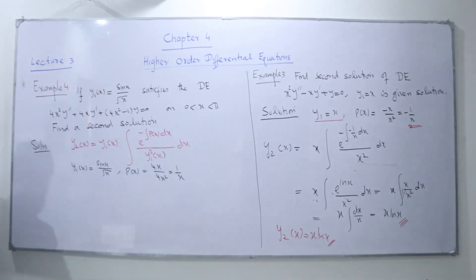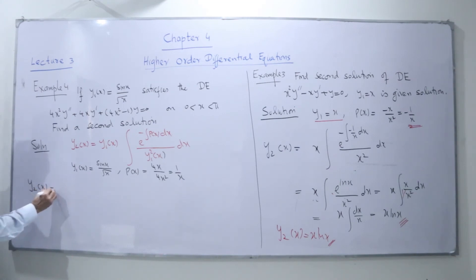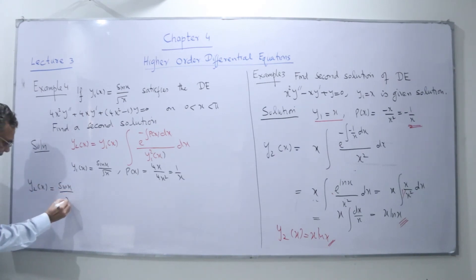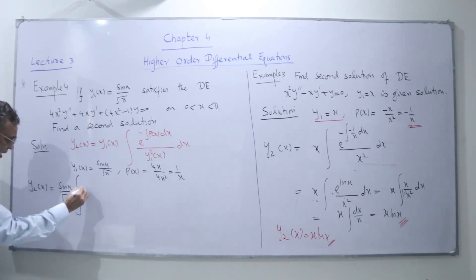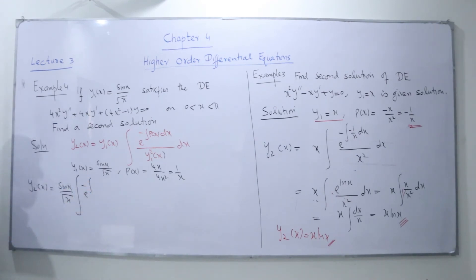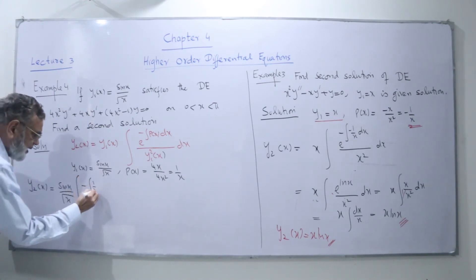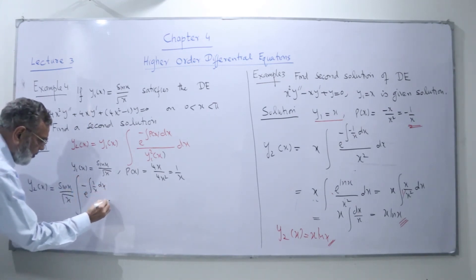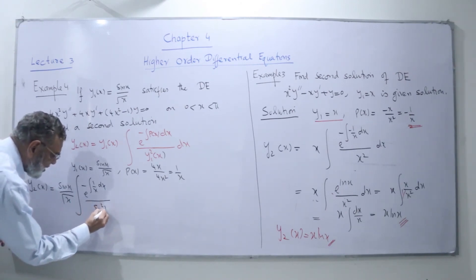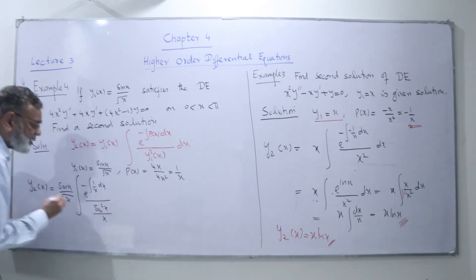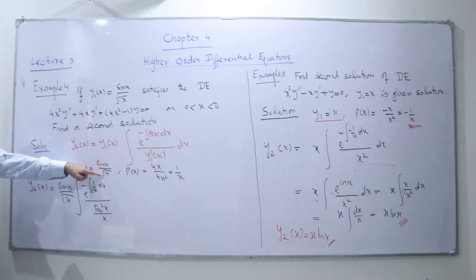Now we substitute into the formula. My y2(x) equals y1(x), which is sin(x) over root of x, times the integral of e to the power of minus the integral of p(x) — where p(x) is 1 upon x — dx, over y1(x) squared. We get sin²(x) over x in the denominator, because squaring sin(x) over root of x gives sin²(x) over x.